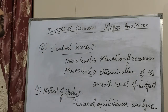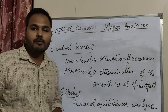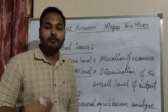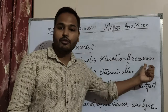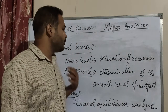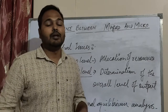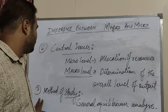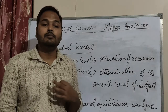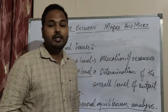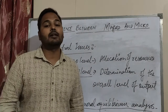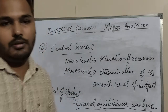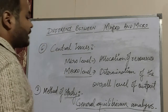The sixth point is the central issues. At the micro level, the central issue is allocation of resources. At the macro level, the central issue is determination of the overall level of output — meaning we have to see how much output is being produced in the economy. The seventh point is method of study: at the macro level we study general equilibrium analysis, analyzing all the markets within the economy. At the micro level, it is partial equilibrium analysis — partial means about a single market or one market, while general means all markets.